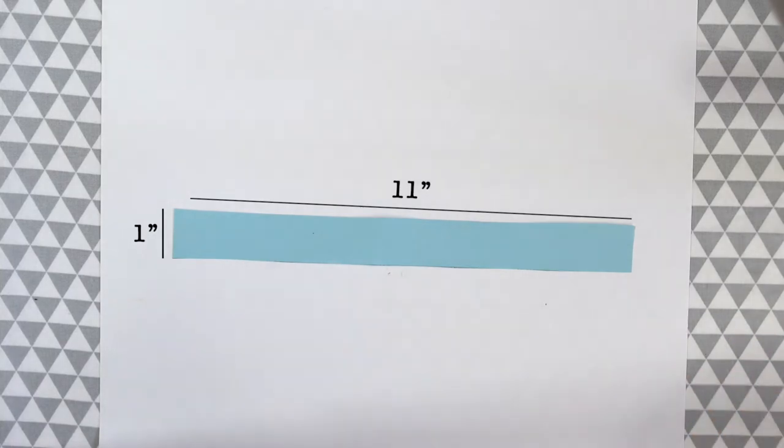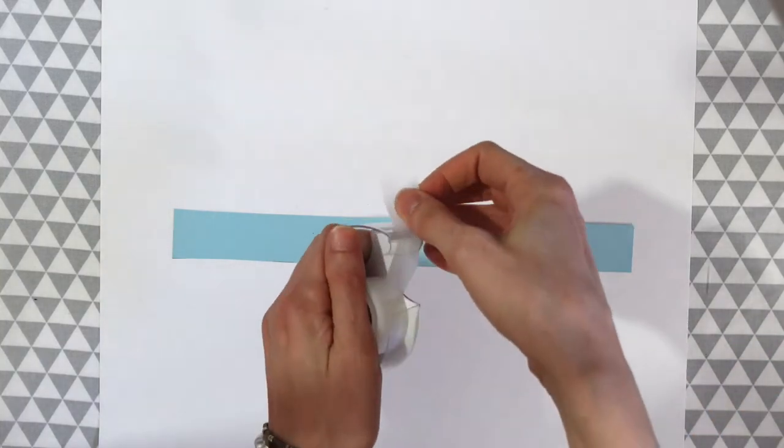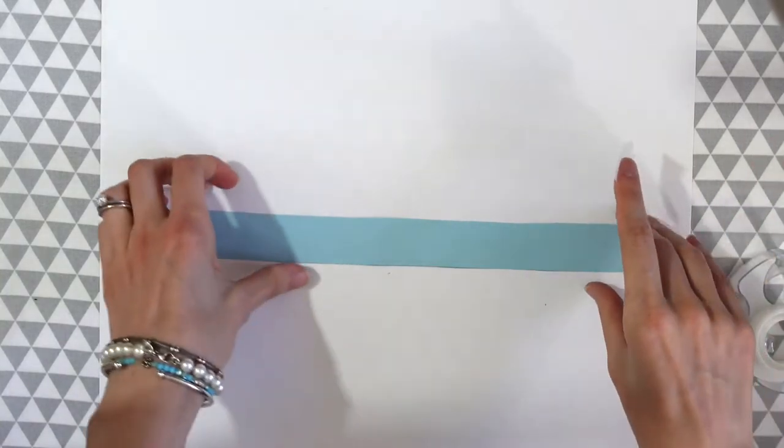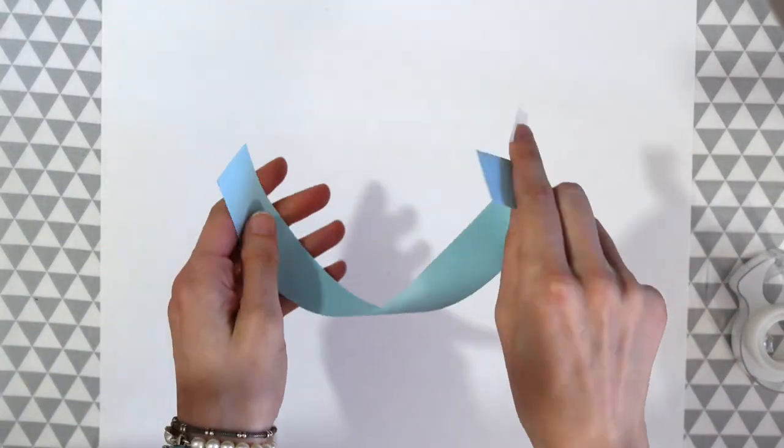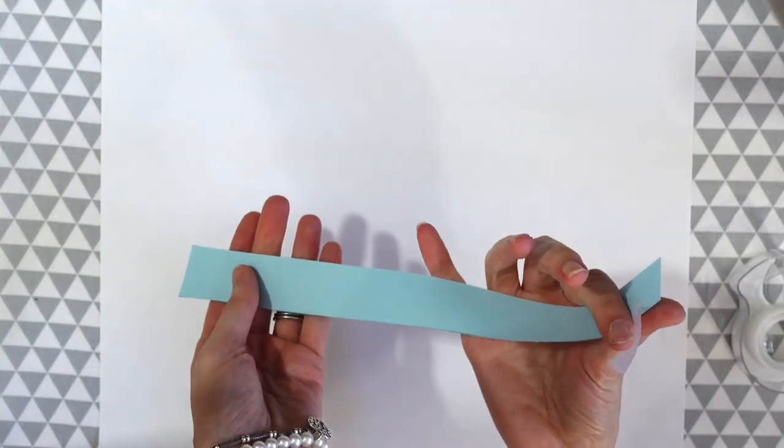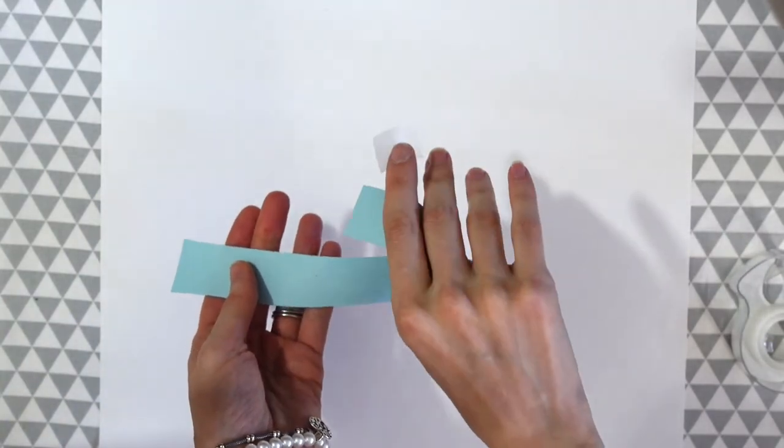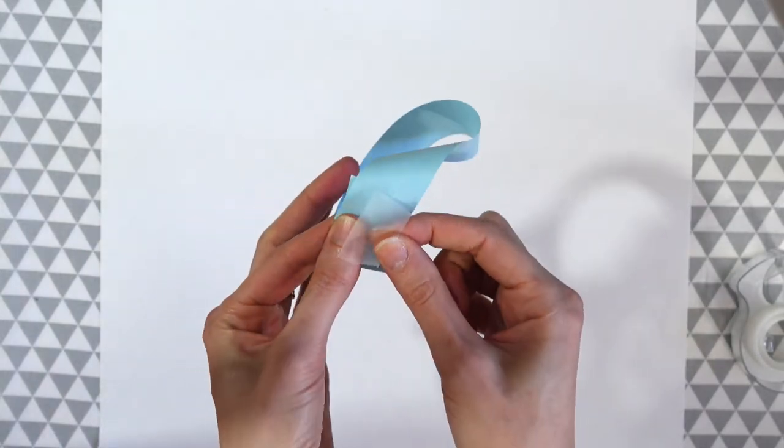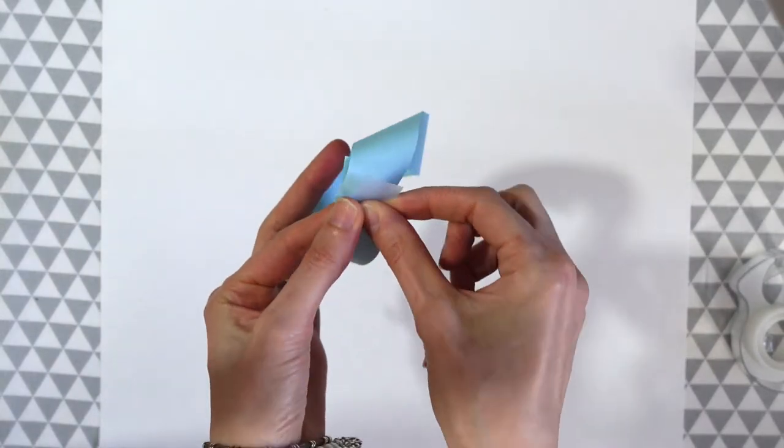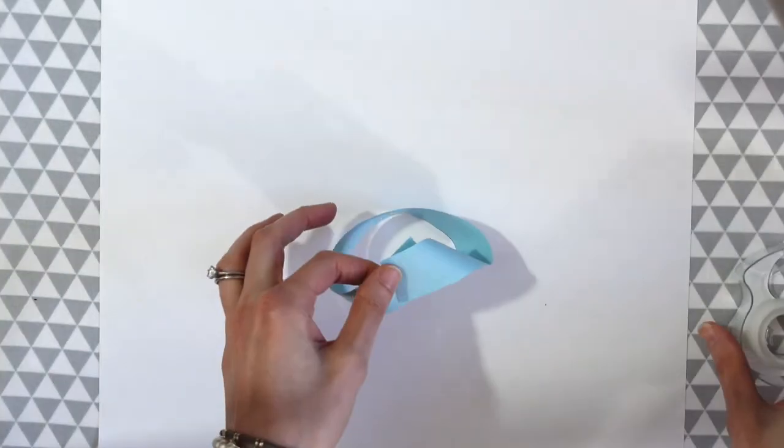And now the next step is we're going to get a piece of tape ready. So just have it handy. And we're going to take one end of our rectangle and just give it a half twist. So we have our one side of the rectangle and then we're just going to twist it and then bring it to the other side. Bring it on top of the other side. And then we're just going to use our tape to tape it together.